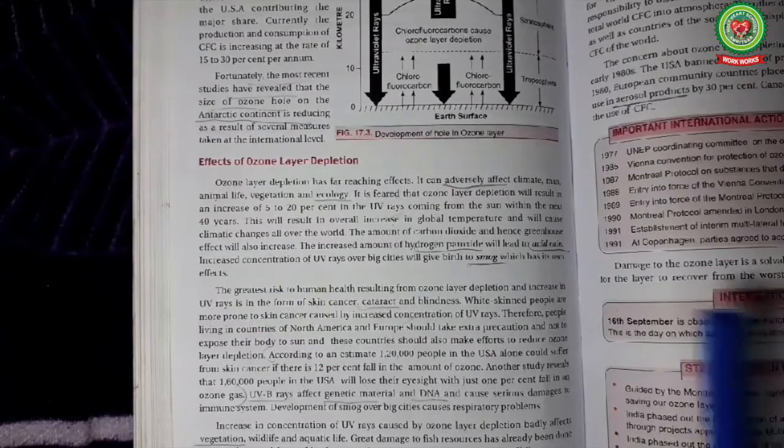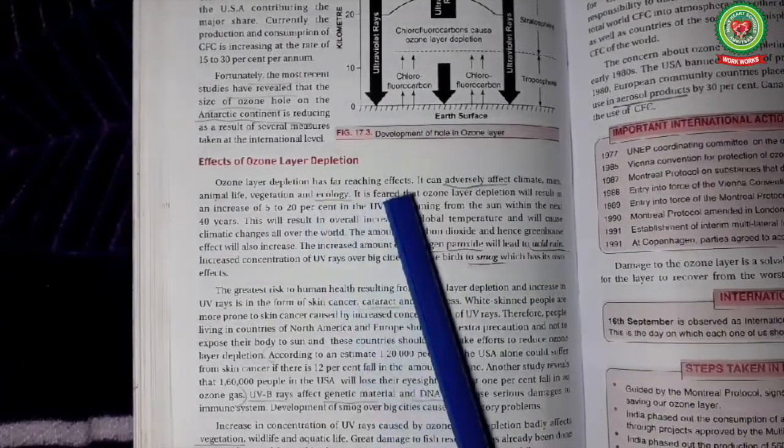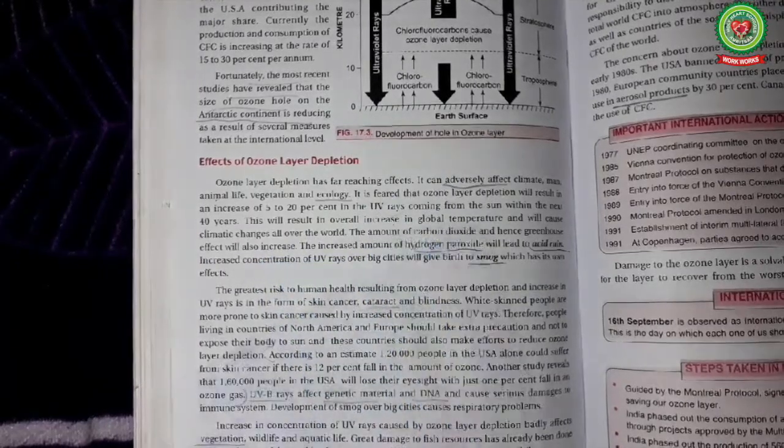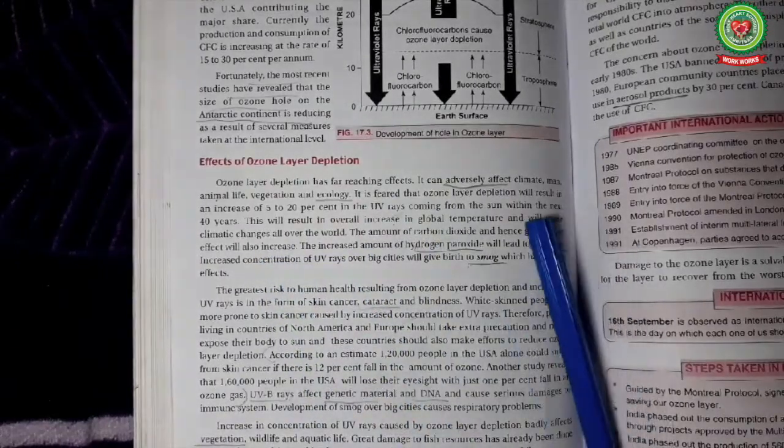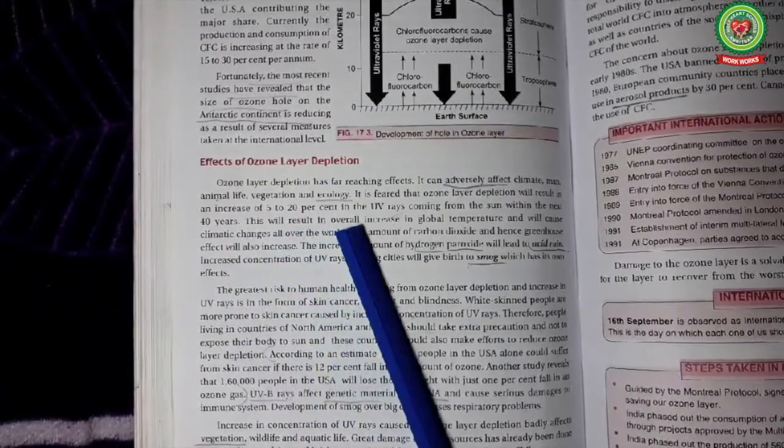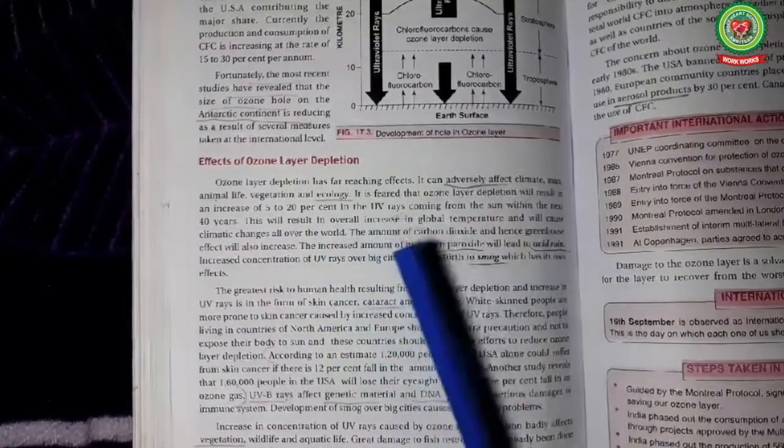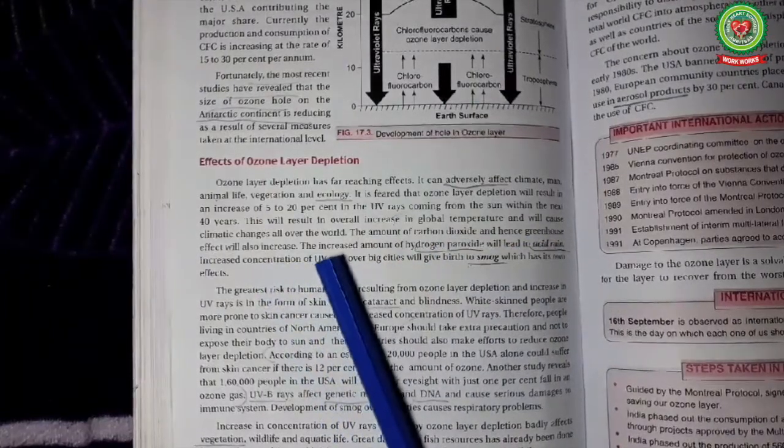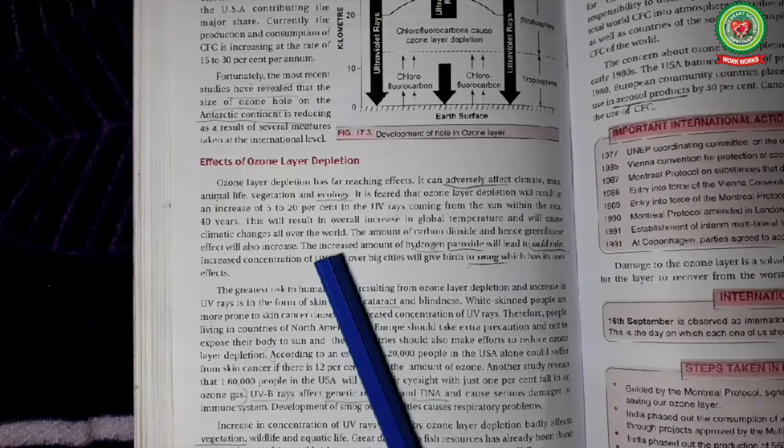Let us see the effects of ozone layer depletion. The depletion of ozone layer can affect the climate, man, animal life, vegetation and ecology. The temperature and the climatic changes all over the world is taking place due to depletion of ozone layer.